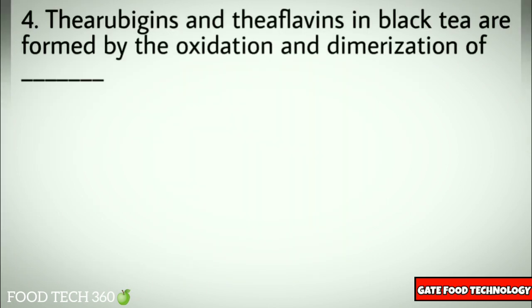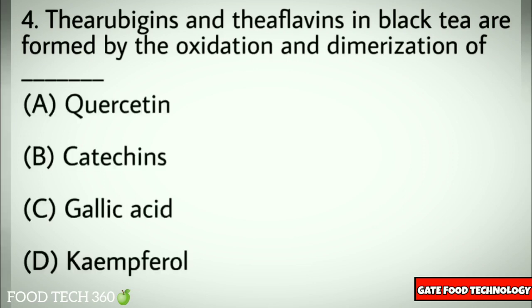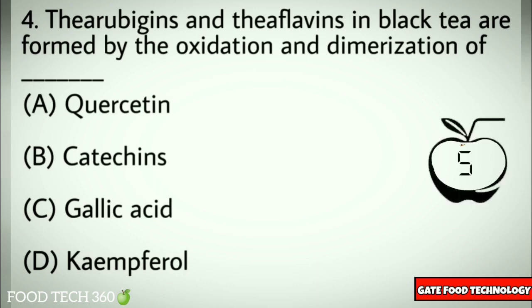Correct answer: A) low glass transition temperature of the compounds in juice. Question number four: Thearubigins and theaflavins in black tea are formed by the oxidation and polymerization of — options: A) quercetin, B) catechins, C) gallic acid, D) kaempferol. Correct answer: B) catechins.